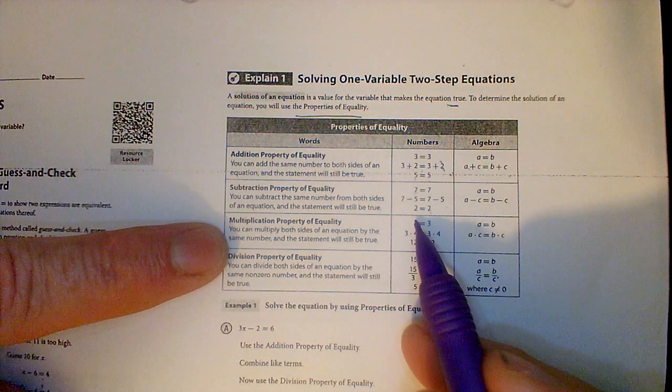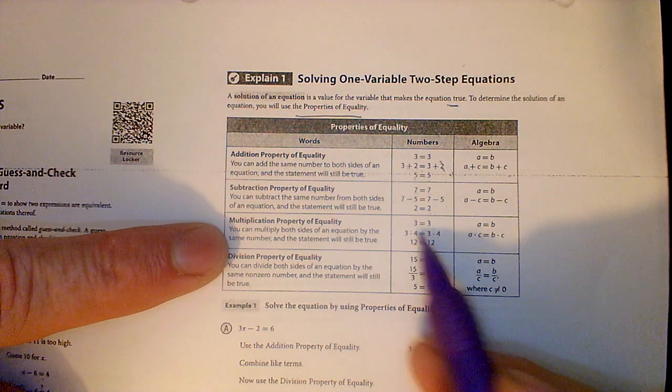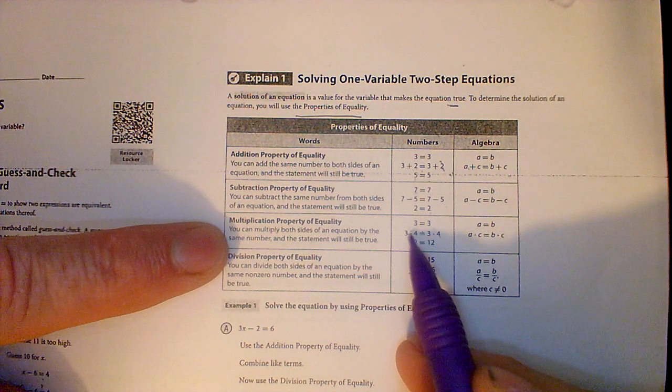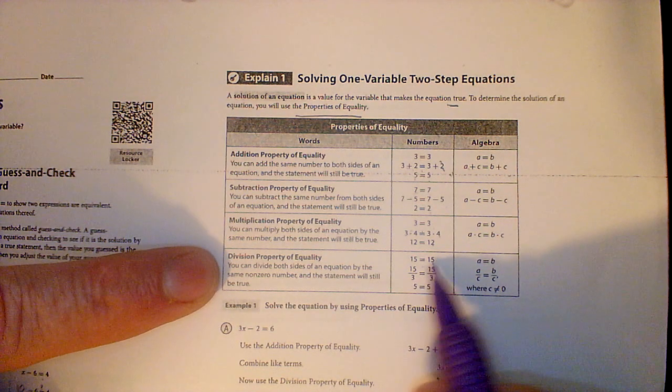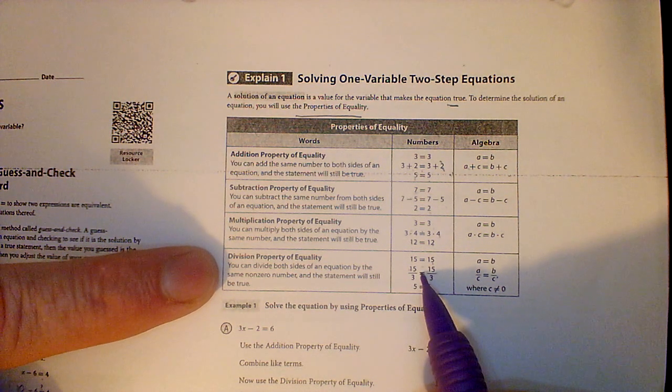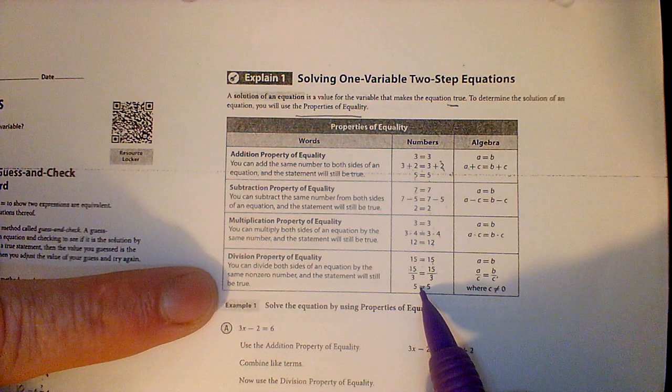Same thing with multiplication. If 3 equals 3, as long as I multiply both sides by, in this case, 4, it's still true. 3 times 4 is 12 equals 12. 15 is 15. As long as I divide both sides by the same amount, in this case, 3, it's still equal. 5 equals 5.